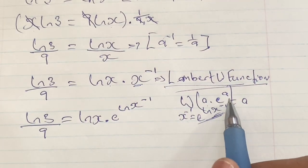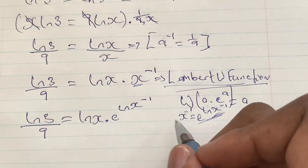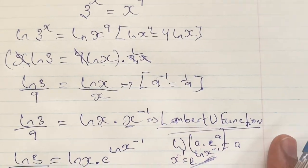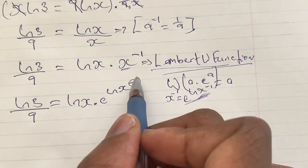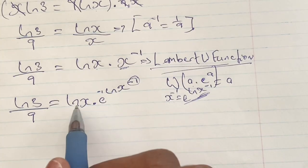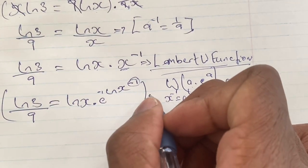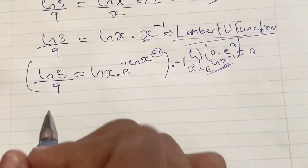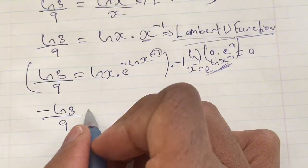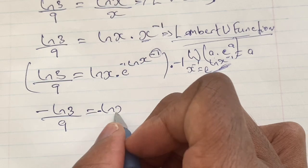For the Lambert W function to work, we need the form a times e to the power of a. We have ln x in the base and in the power, but the x in the power is raised to negative 1. Applying the logarithm rule brings the negative 1 in front, so we need it in front of the base ln x. This is achieved by multiplying the equation by negative 1, giving us: negative ln 3 over 9 is equal to negative ln x times e to the power of negative ln x.